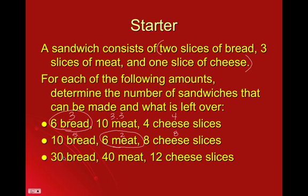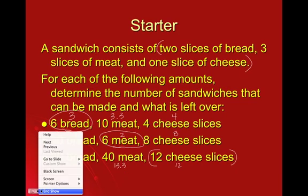Since we're only making two sandwiches, we're going to have six slices of cheese left over. Then in this last big one, thirty slices of bread means we can make fifteen sandwiches. Forty slices of meat means we can make thirteen and a third. Twelve cheese slices means we can make twelve sandwiches. So this time the limiting one is the cheese, and we'll have leftover bread and meat — specifically six slices of bread and four slices of meat left over.